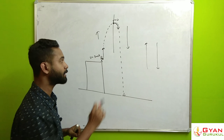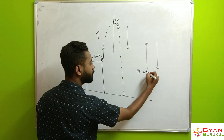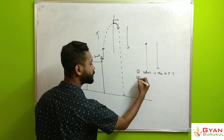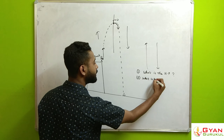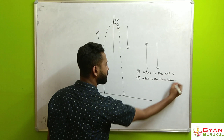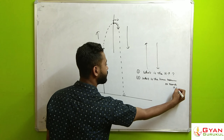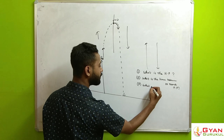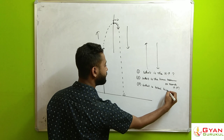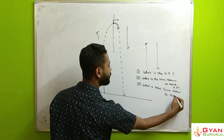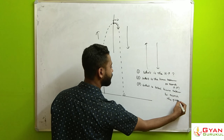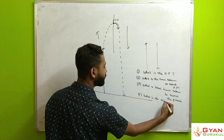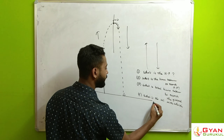Our questions are: First, what is the highest point till which the ball can rise? Second, what is the time taken to reach the highest point? Third, what is the total time taken to reach the ground? And fourth, what is the velocity with which it hits the ground?